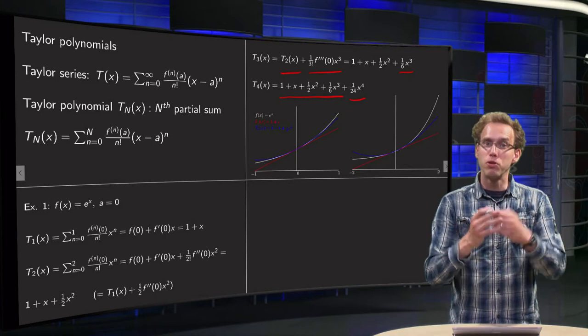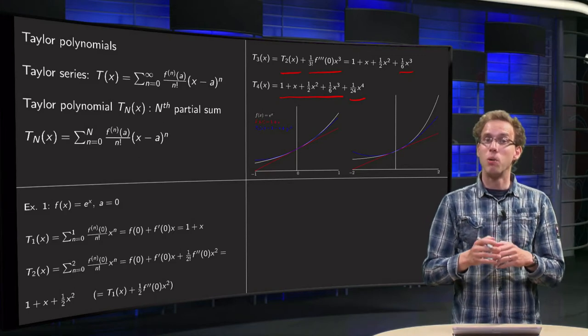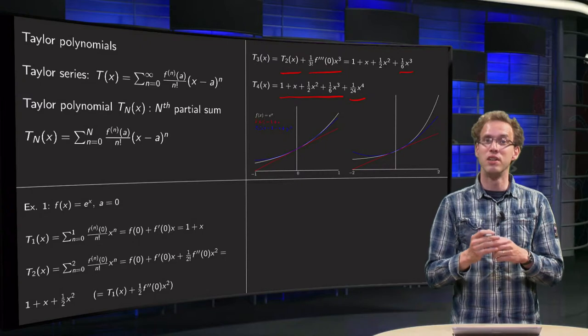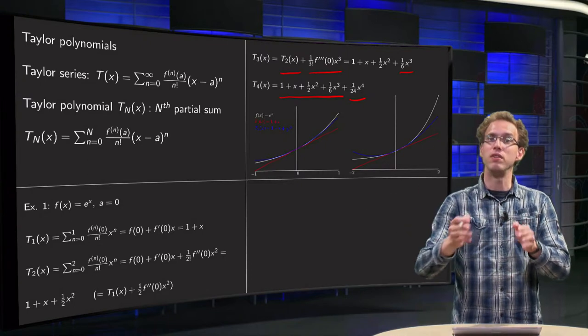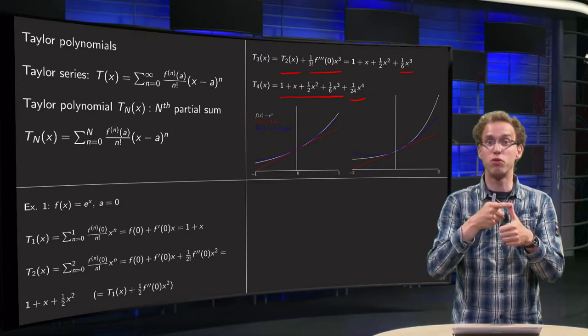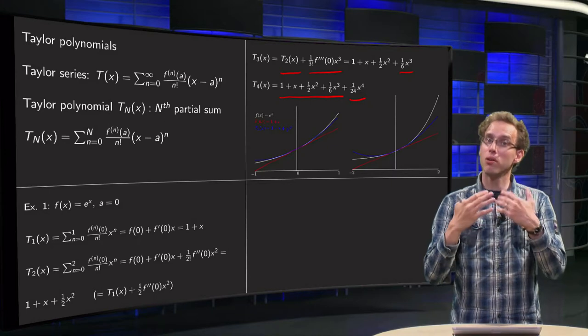So, now we have computed a few Taylor polynomials, and how good is our approximation? So instead of summing up to infinity, we sum up to capital N equals one, two, three, or four. So let's make a plot.